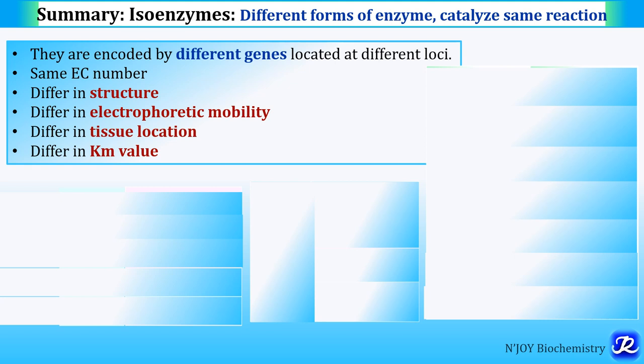For LDH: LDH1 has the fastest electrophoretic mobility toward the anode, and LDH5 has the slowest electrophoretic mobility.